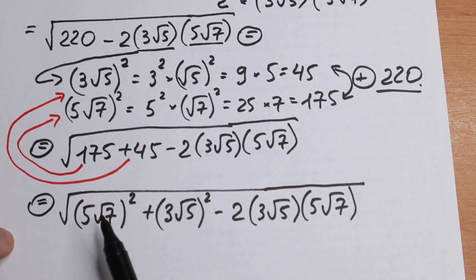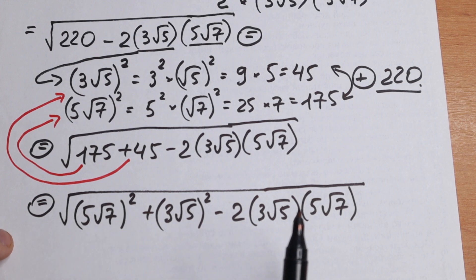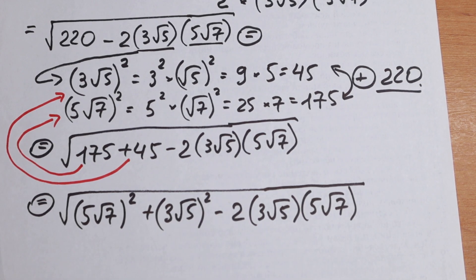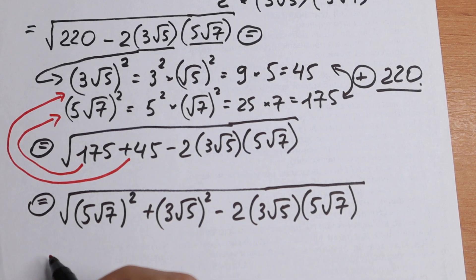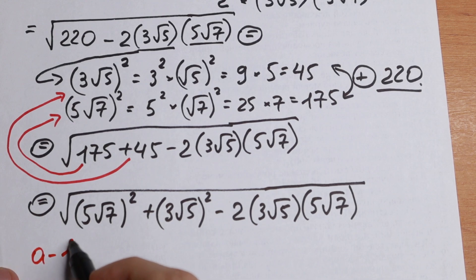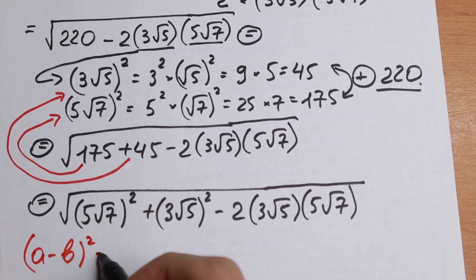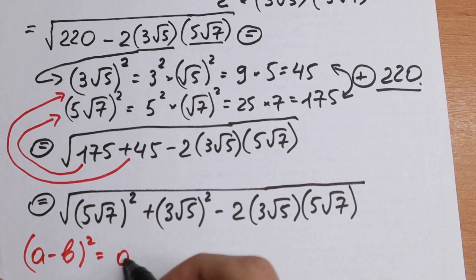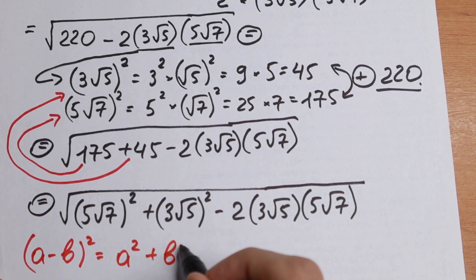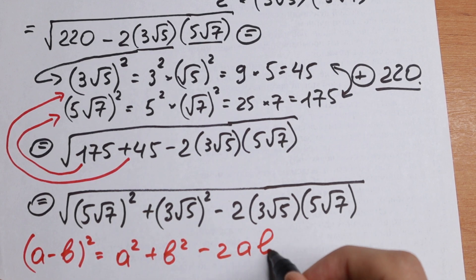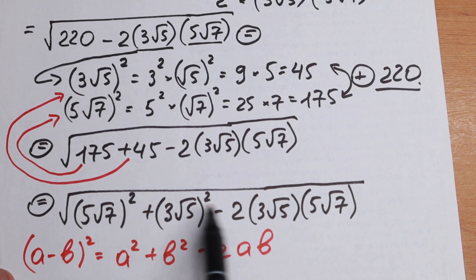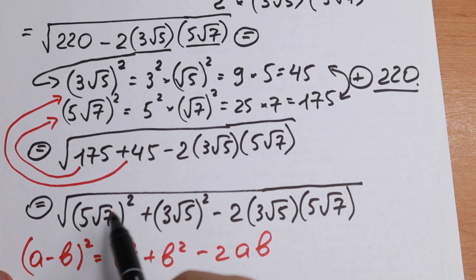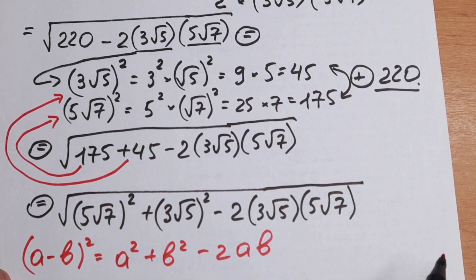I want to show you why we need this expression. Under the radical I want to write a formula — the formula for (a − b)² expanded to the second power. We all know this classic formula: a² + b² − 2ab. Take a look closely at what we have — right here we have the formula, and on top we have our expression — and I hope you can see that we have the same elements.